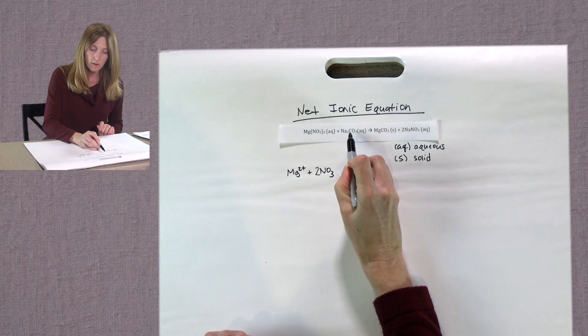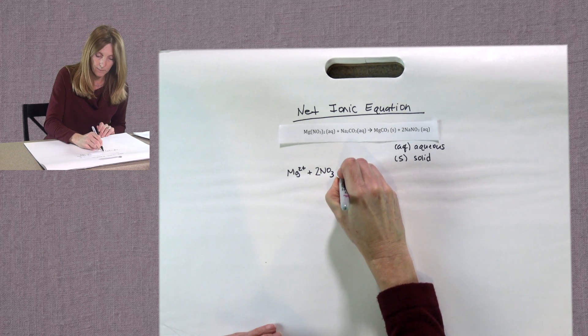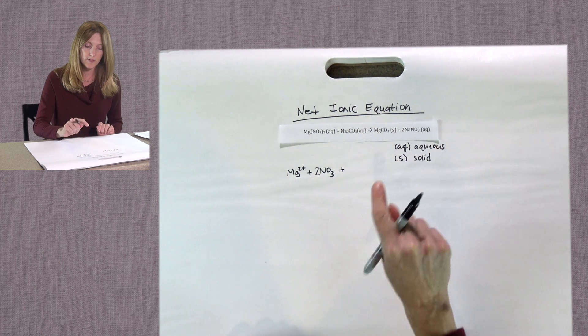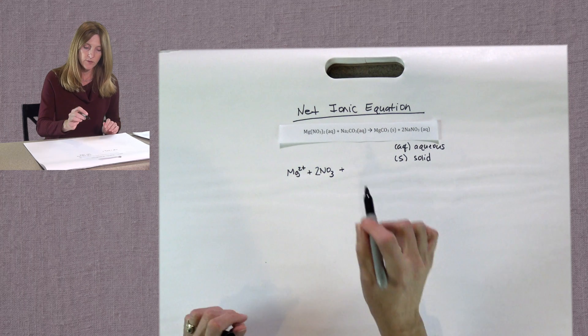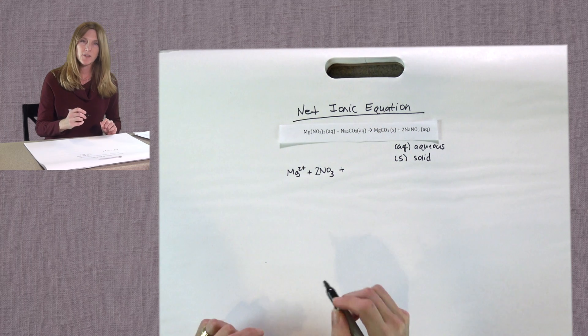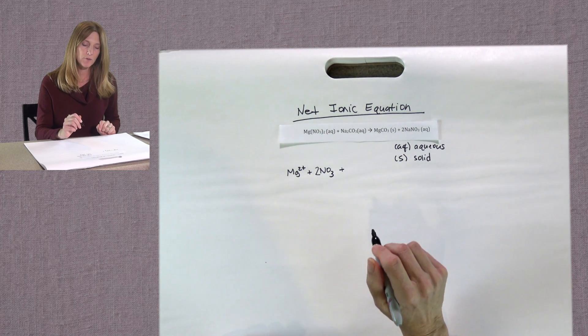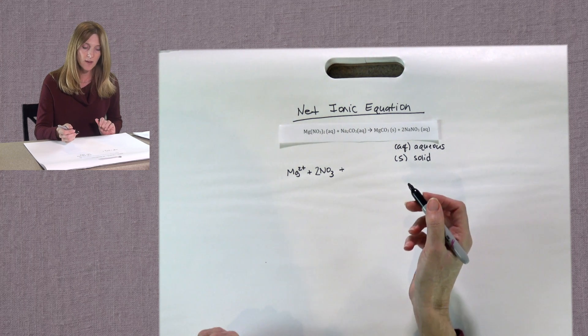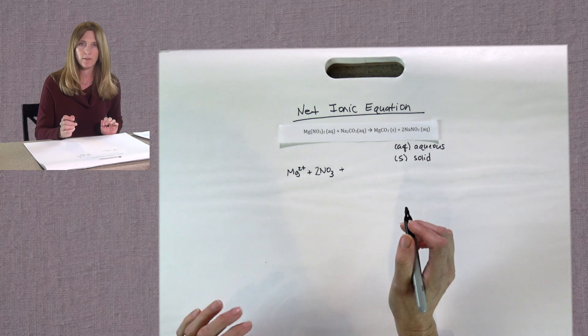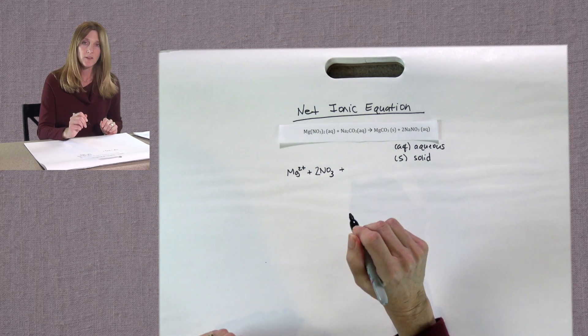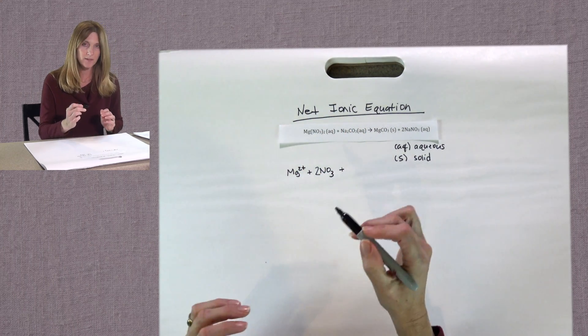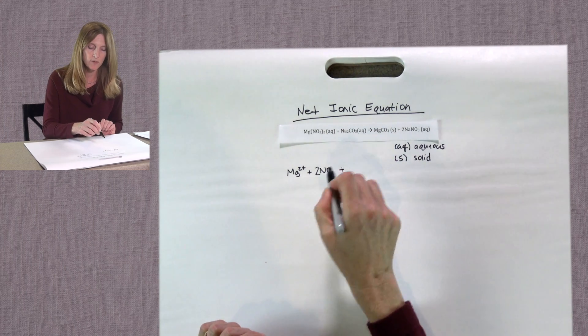Our next compound is sodium carbonate. It has the AQ after it, which also means it is aqueous or it is soluble in water. So it will come apart into the sodium ion and the carbonate ion. As you can see, it's really important that you spent the time to memorize your polyatomic ions. That's why I asked you to do this earlier in the semester. It's because when you look at compounds like this, if you truly did memorize your polyatomic ions, it's easier for you to spot in situations like this.